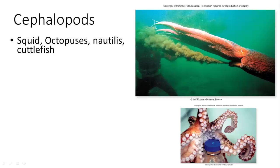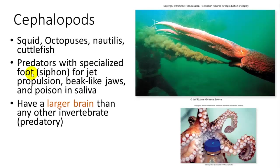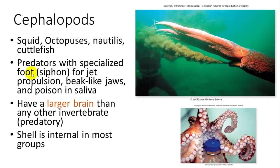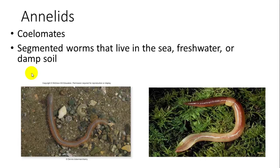Cephalopods — squid, octopus, nautilus, and cuttlefish — are generally smarter than most invertebrates. They are predators with a specialized foot or siphon for jet propulsion and can squirt ink. They have beak-like jaws and some have poison in their saliva. They have a larger brain than most other invertebrates, plus networks of nerves functioning like distributed smaller brains. The shell is mostly internal in most groups.